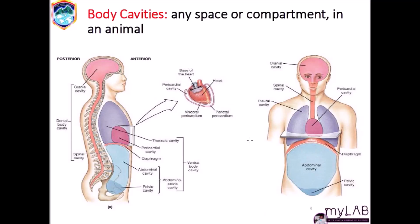Body cavities are spaces or compartments in an organism or animal. Within the human body, we have various cavities. On the posterior, we have the cranial cavity, which houses our brain, and the spinal cavity, which contains the spinal fluid. These two form the dorsal body cavity. We talked about directional terminologies, and then on the anterior we have the thoracic cavity.